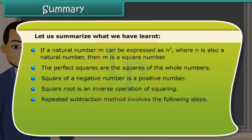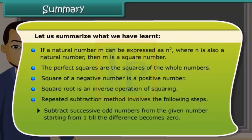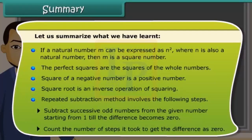Repeated subtraction method involves the following steps: subtract successive odd numbers from the given number starting from 1 till the difference becomes 0. Count the number of steps it took to get the difference as 0.